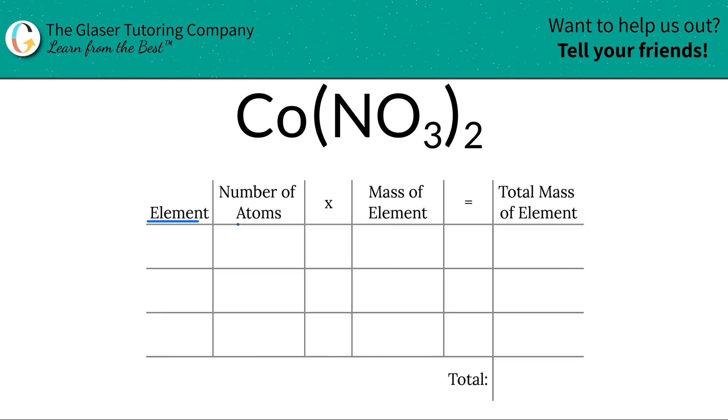To fill out the first column, what we need to do is write down the elements we see. So we see cobalt in there — Co — we see nitrogen, and we see oxygen. Cobalt, nitrogen, oxygen.